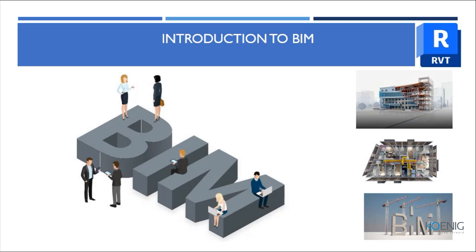Everything related to the building — the architectural part, structural part, MEP part (mechanical, electrical, and plumbing) — is embedded in this 3D model. For example, if a beam or column is created using BIM, all parameters like material, size, weight, shape, time taken for construction, and cost are embedded to that beam or column in the model and can be retrieved whenever required.